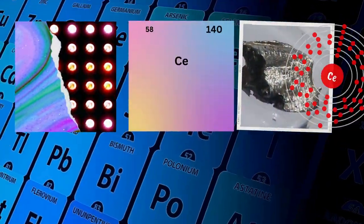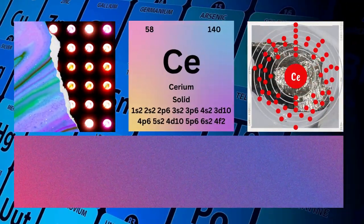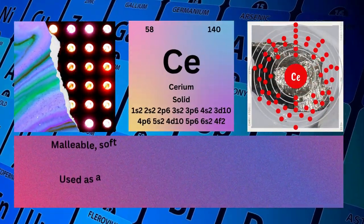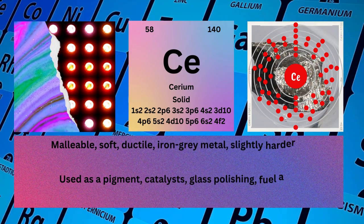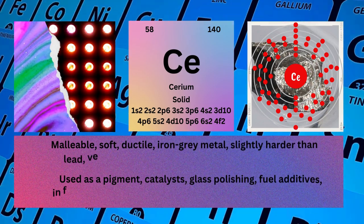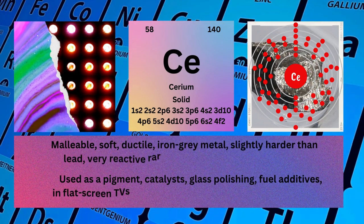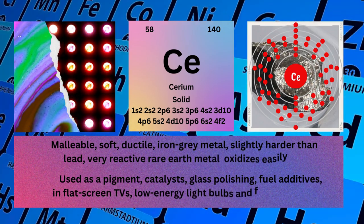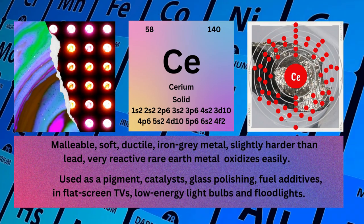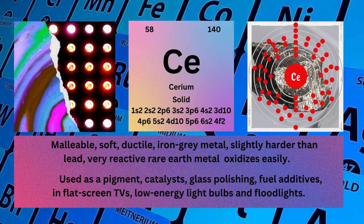Cerium. Atomic number: 58. Mass number: 140. Symbol: Ce. State: Solid.